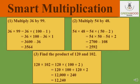Now look at the second one: multiply 54 by 48. We split 48 as 50 minus 2. So first 54 into 50, then minus 54 into 2. 54 into 5 is 270 and 1 zero from 50, giving 2700. Minus 54 into 2 is 108. Subtract the two numbers and you get your answer as 2592. Look at the third example: find the product of 120 and 102. 102 is split as 100 plus 2. First 120 into 100 gives 12,000, plus 120 into 2 gives 240. The total of the two numbers is 12,240.